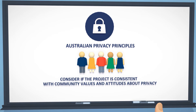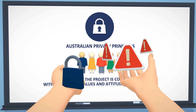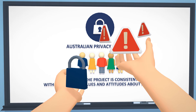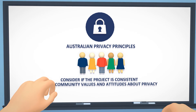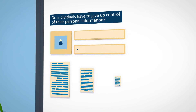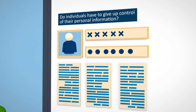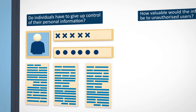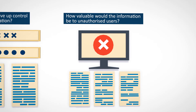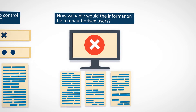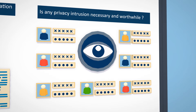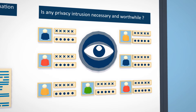The main aim of the Privacy Impact Analysis is to determine if the project's privacy outcomes are acceptable. Firstly, consider the possible privacy risks to the project as a whole. Do individuals have to give up control of their personal information? How valuable would the information be to unauthorised users? Is any privacy intrusion, such as surveillance, necessary and worthwhile for the project?